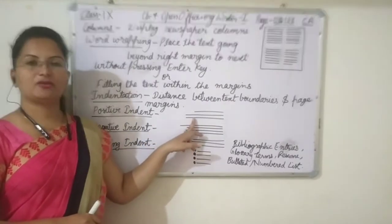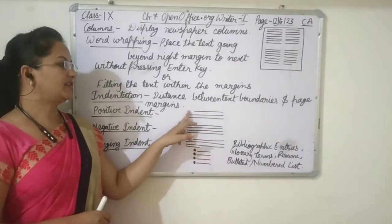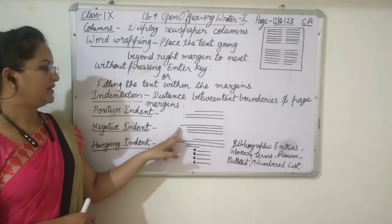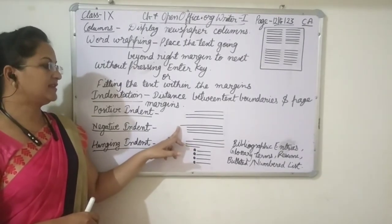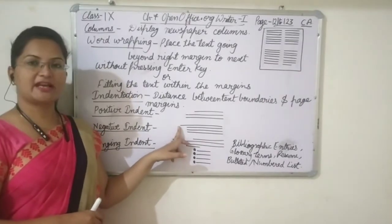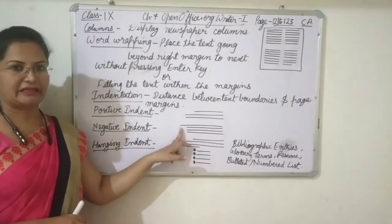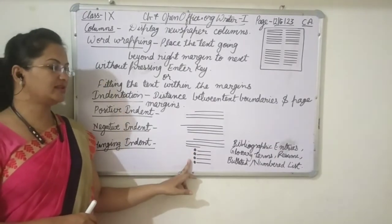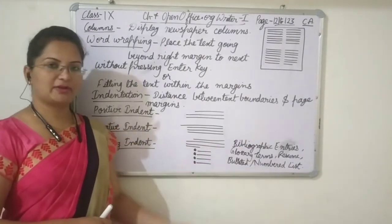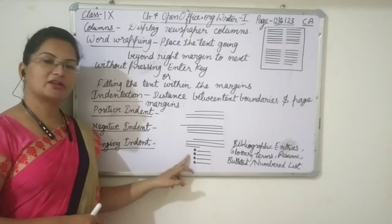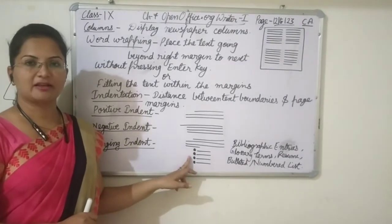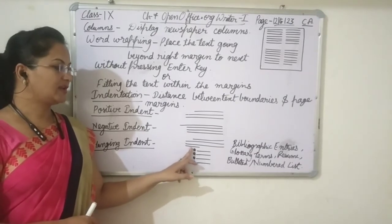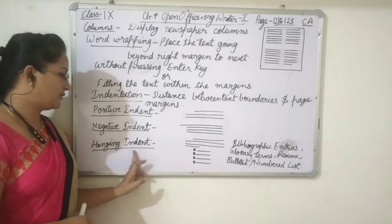Positive indent means the space before the first line of the paragraph, which mostly shows that we have started a new paragraph. Negative indentation means we decrease the space before the first line of the paragraph. Hanging indentation is like what you see when we insert a numbered list or bulleted list — there is a slight space before the bullets and numbers, and it looks quite different from the rest of the paragraph. This is known as hanging indentation.